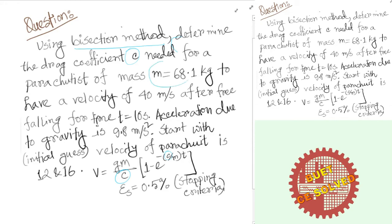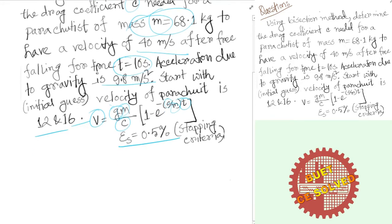The given values are: m equals 68.1 kg, velocity V equals 40 m/s, time t equals 10 seconds, acceleration due to gravity g equals 9.8 m/s². We start with initial guesses: the lower limit xl equals 12 and upper limit xu equals 16. The stopping criteria for the bisection method is epsilon-s equals 0.5%.